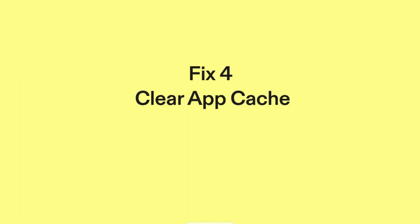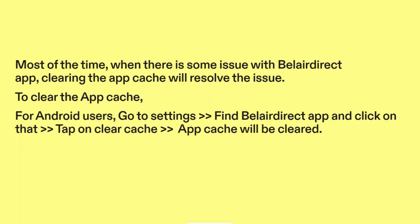Fix four: Clear app cache. Most of the time, when there is some issue with the Belair Direct app, clearing the app cache will resolve the issue. To clear the app cache for Android users: go to Settings, find the Belair Direct app and click on it, then tap on Clear Cache. The app cache will be cleared.